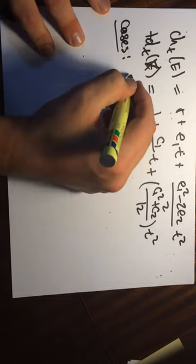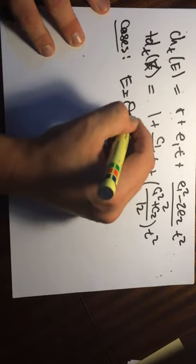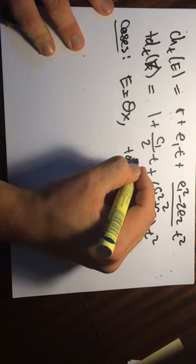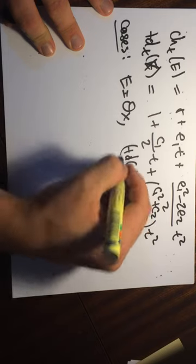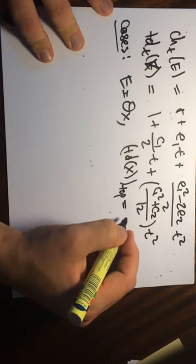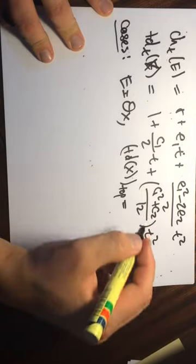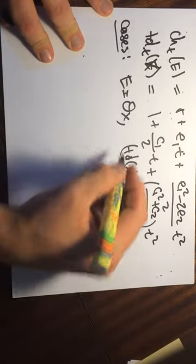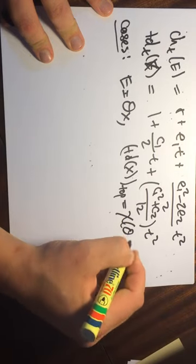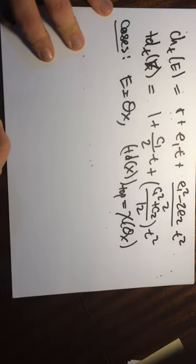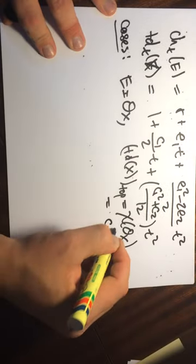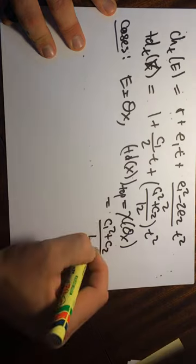So when E is equal to O of X, we know that the Todd class, the top Todd class, well the degree of this is equal to chi of O of X. And so in this case, we have the Todd class here. This is C_1 squared plus C_2 divided by 12.